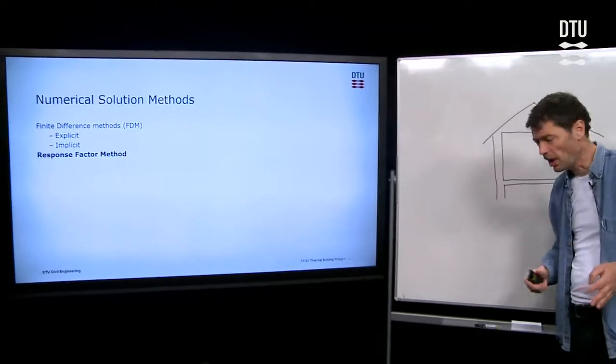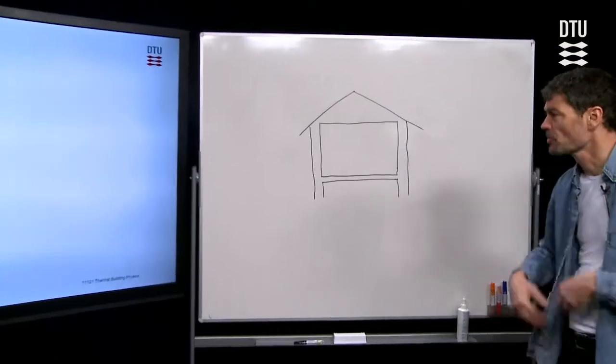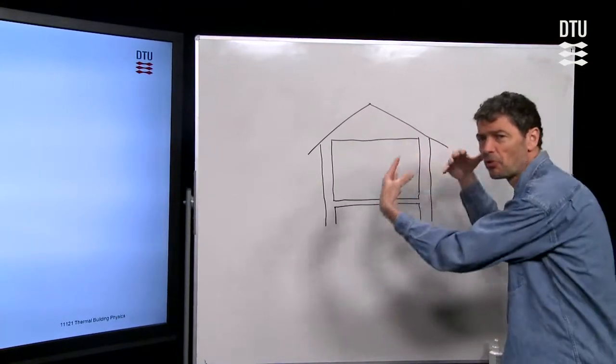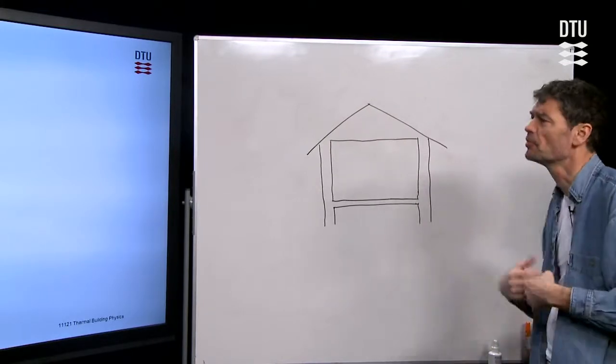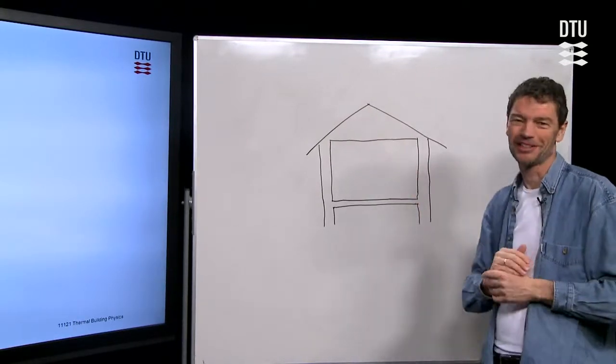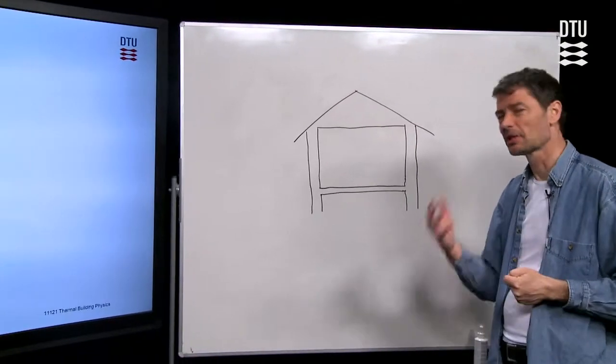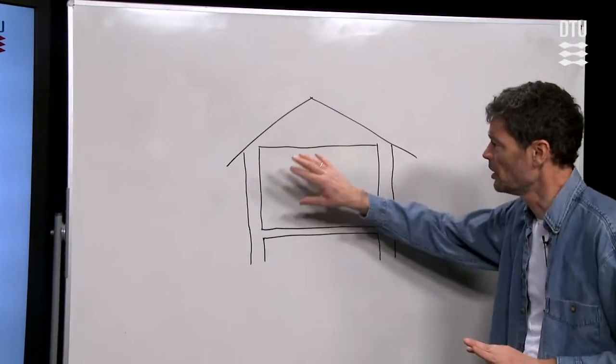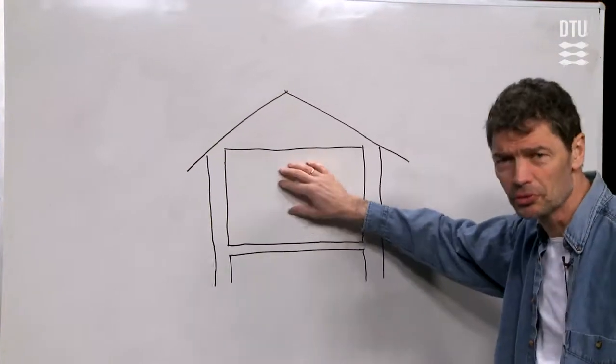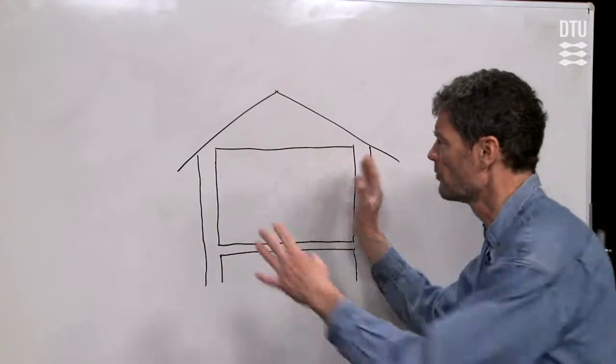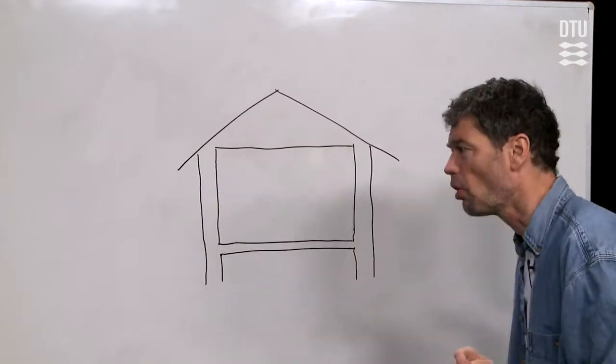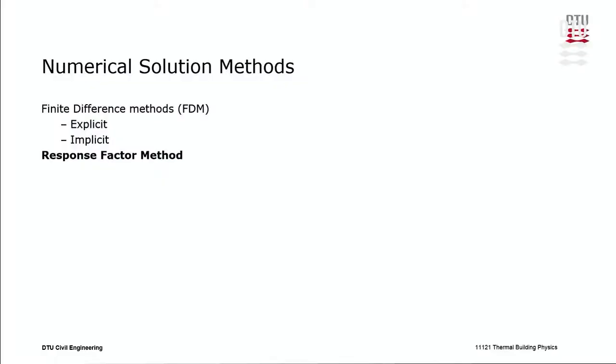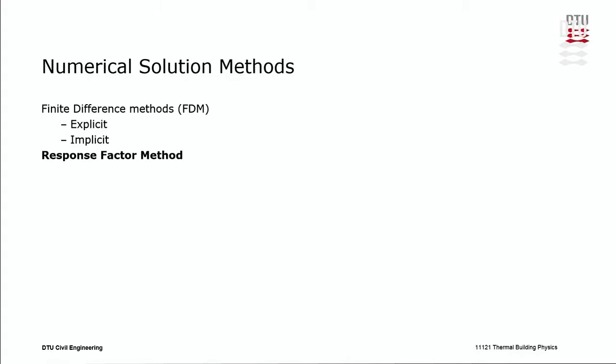I'll just go over here on the whiteboard to explain a little bit of why we do these things, because it is actually belonging to the lectures about transient conditions for rooms or for whole buildings. But those methods, both for the finite difference method and also for the response factor method that we talk about now, they are dealing with the walls. So really, we should make a heat balance for the room or for the building rooms. But very much the heat exchange with the walls are important to describe the transient development of the temperatures and heat flows in our buildings.